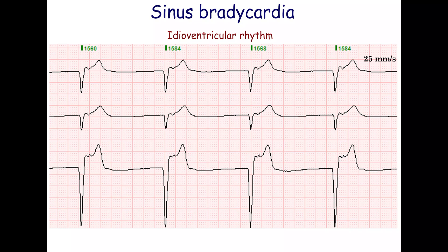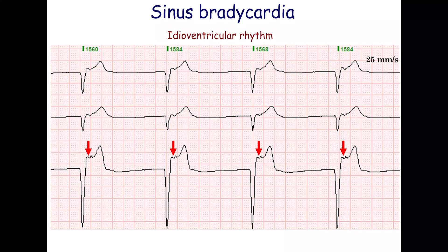The ventricular rate is between 20 and 40 beats per minute. A ventricular rhythm with a rate ranging from 40 to 100 beats per minute is called an accelerated ventricular rhythm. This ECG shows a ventricular escape rhythm at a rate of 38 beats per minute. The P-waves are indicated by arrows and are superimposed on the ST segments.